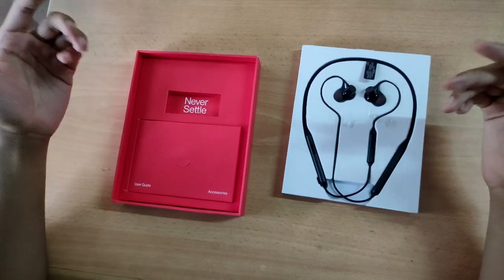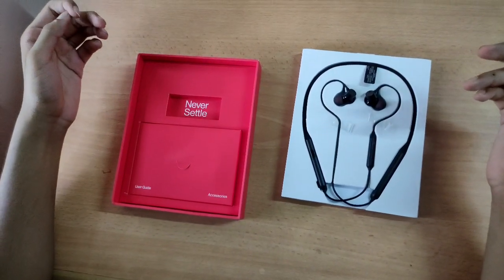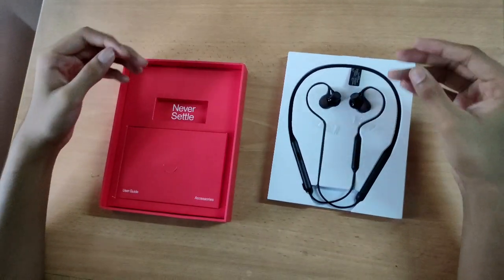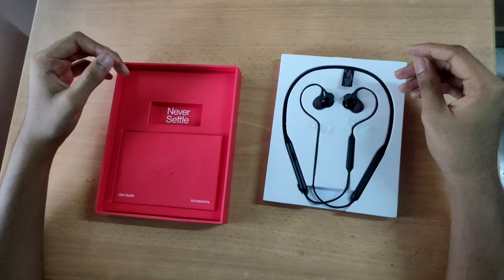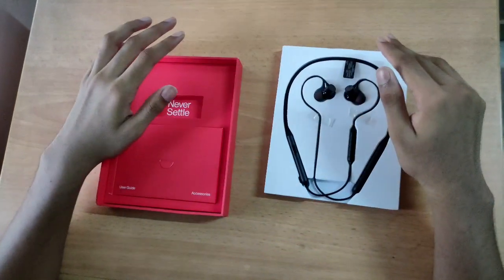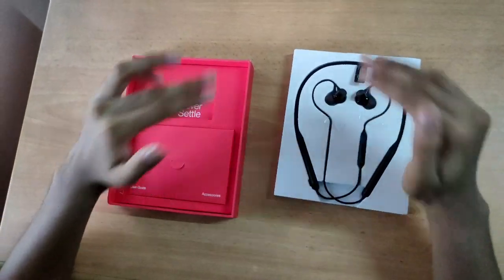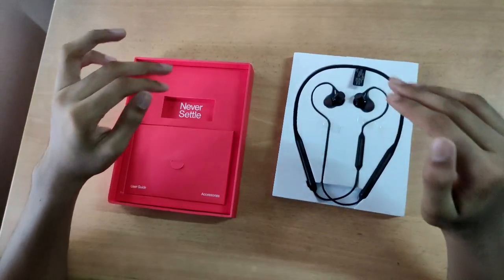The OnePlus Wireless 2 has dual audio drivers of about 10.2mm, but this wireless headset packs a 9.2mm driver system, which has good sound but the bass will be less in this wireless headset.